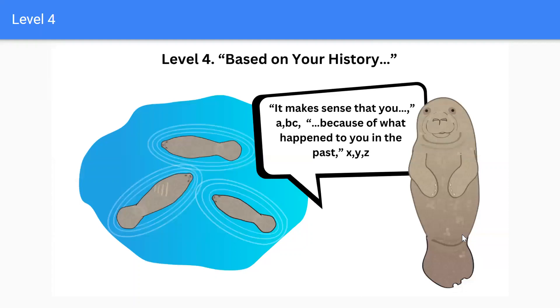Level 4: Based on Your History. 'It makes sense that you A, B, C because of what happened to you in the past, X, Y, Z.' This level connects the person's current reactions to their personal history.